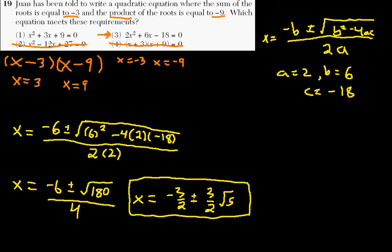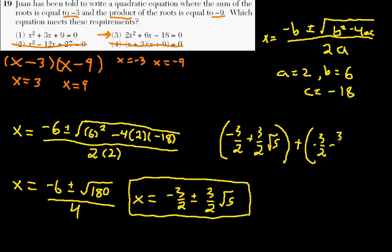Okay, so that's what we have when we apply the quadratic formula to this. Now, the plus and the minus mean we actually have two values of x. So if we add negative 3 halves plus 3 halves square root of 5, and then we add that minus 3 halves minus 3 over 2 square root of 5, we end up with negative 3 halves plus 3 halves square root of 5, and then we add to that negative 3 halves minus 3 halves square root of 5. Okay, the negative 3 halves and negative 3 halves, we end up with negative 6 over 2, and the plus and the minus cancel out. This is, of course, negative 3, which is our desired answer.